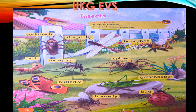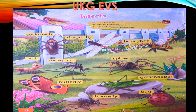Spider — butterfly. Butterfly is in different colors. Grasshopper — it is green in color.